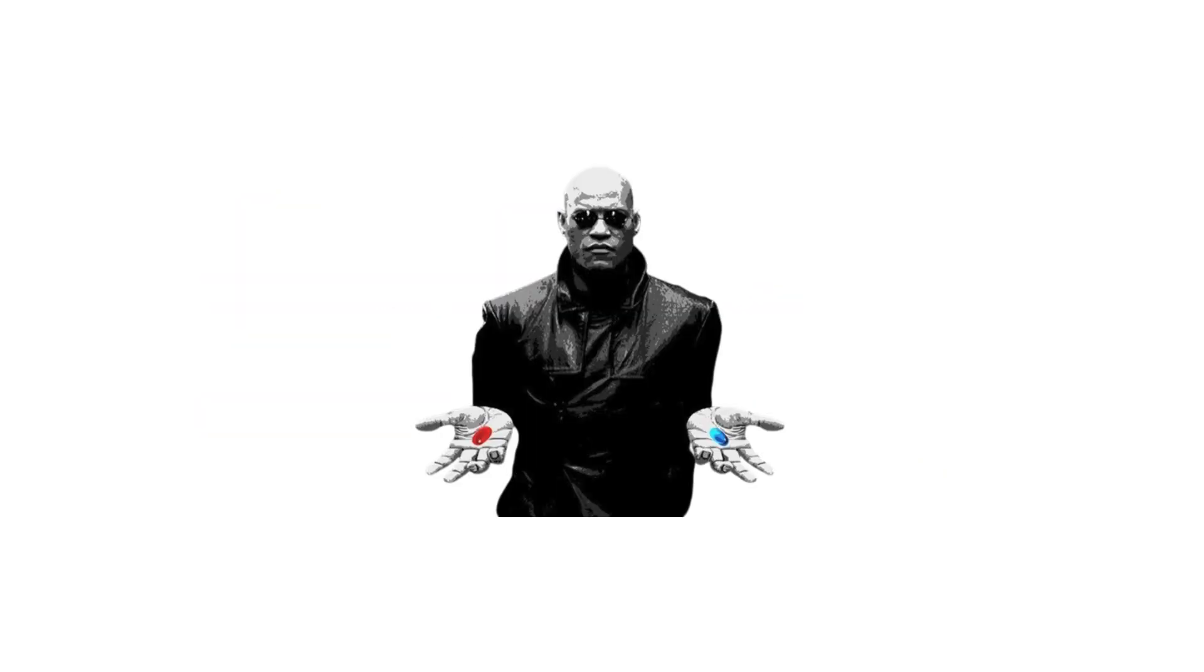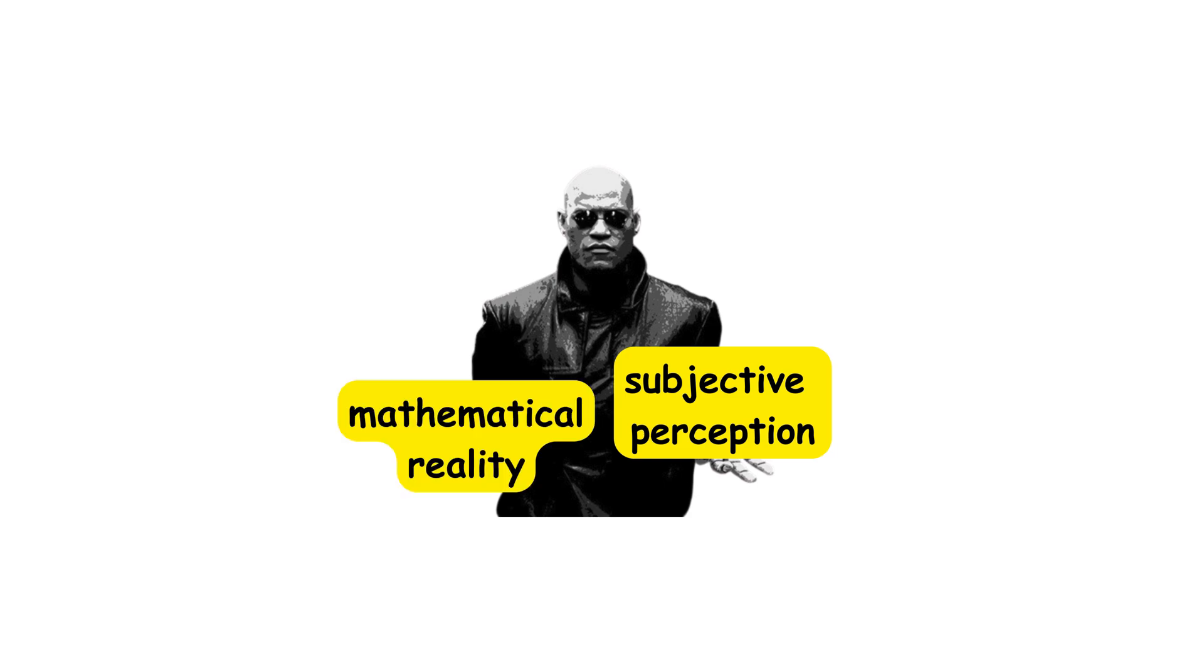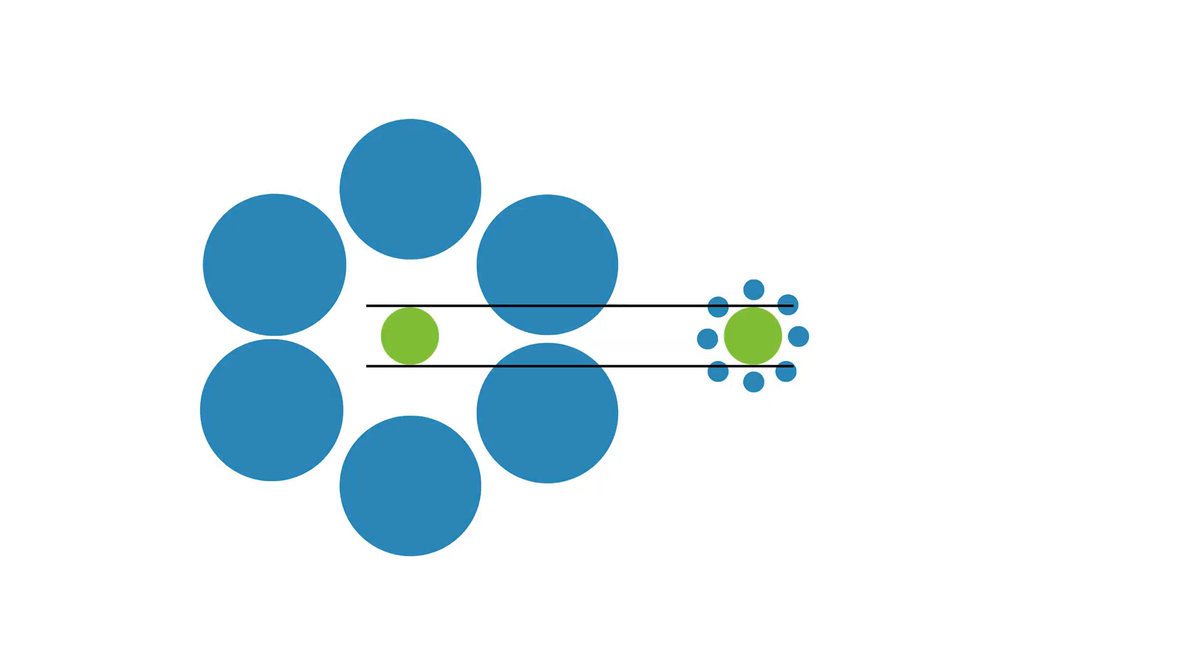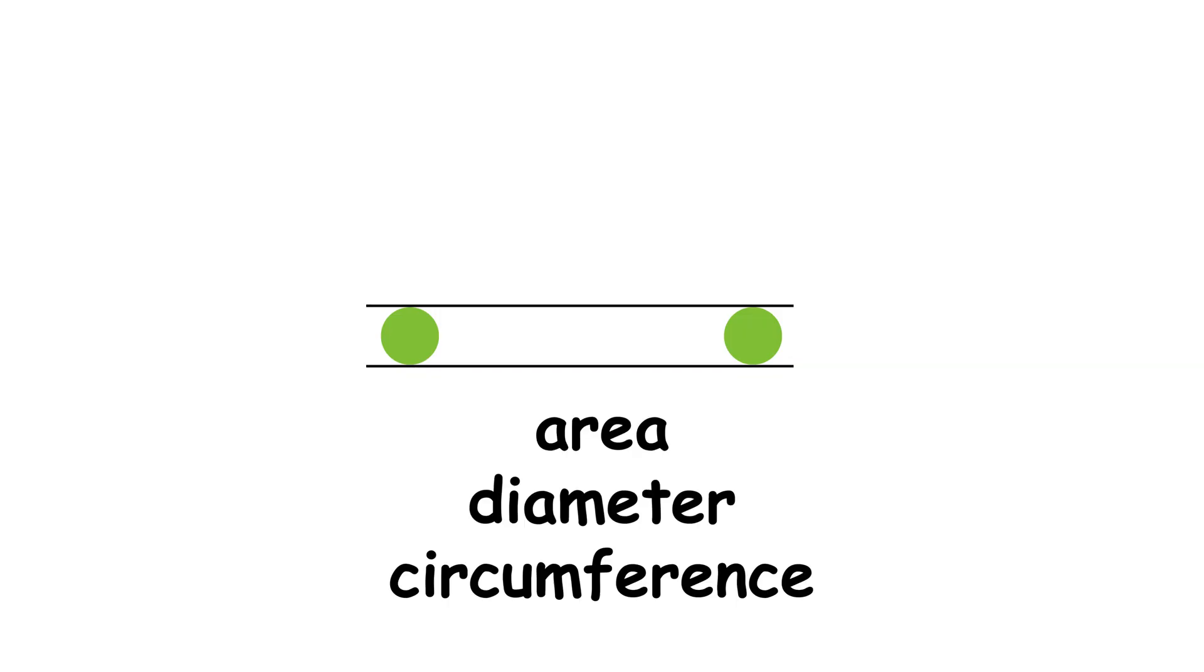This illusion illustrates a key discrepancy between subjective perception and mathematical reality. From a geometric standpoint, the size of the circles can be measured precisely – area, diameter, and circumference. Their equivalence can also be determined objectively.